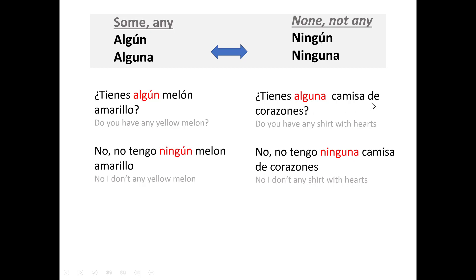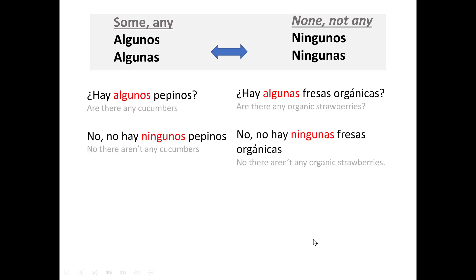¿Tienes alguna camisa de corazones? — Do you have any shirt with hearts? Camisa is feminine and singular, therefore it's alguna, not algún. And in the answer, ninguna, not ningún. No, no tengo ninguna camisa de corazones. Here are the same words but now plural. ¿Hay algunos pepinos? — Are there any cucumbers? It's algunos because pepinos agrees. Answer: no hay ningunos pepinos. ¿Hay algunas fresas orgánicas? — Algunas, because fresas is feminine. No, no hay ningunas fresas orgánicas.